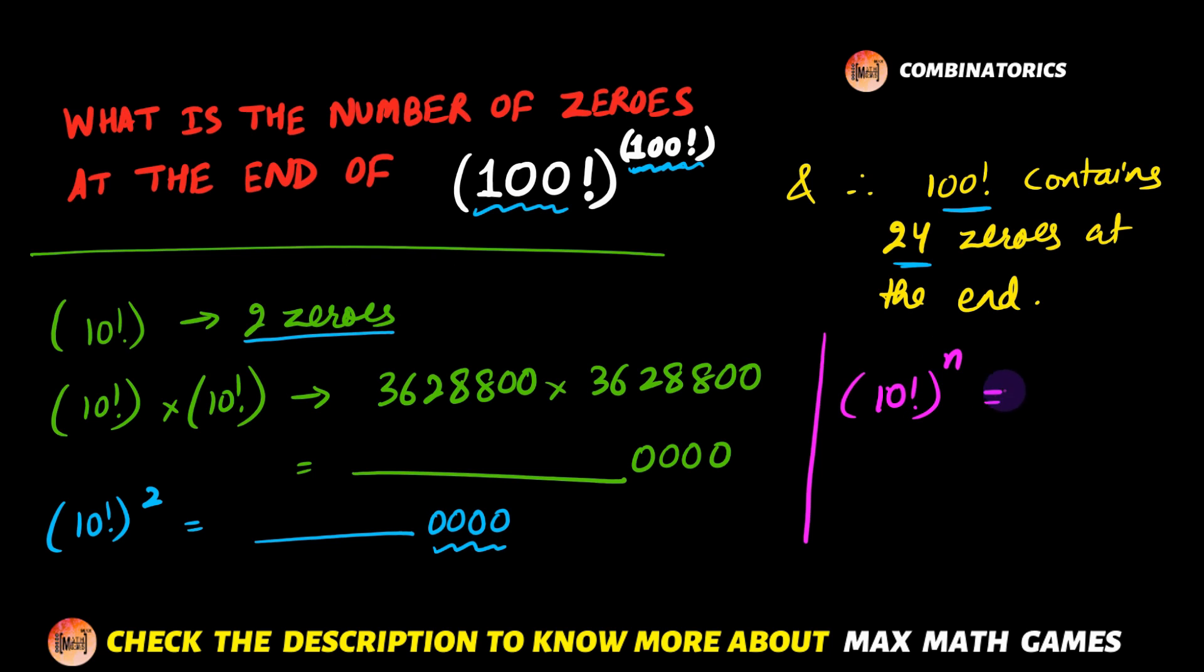And hence if I have 10 factorial raised to the power n, where n is an integer, then the number of zeros will be 2 (because 10! contains two zeros) multiplied by the power, that is 2 × n zeros. And hence 100 factorial raised to the power n will contain 24 × n number of zeros.